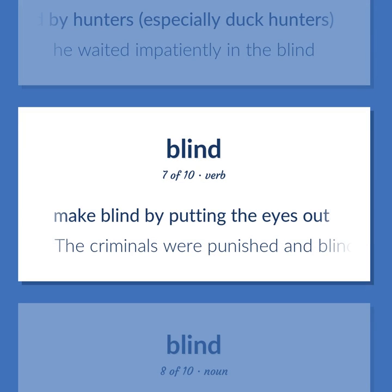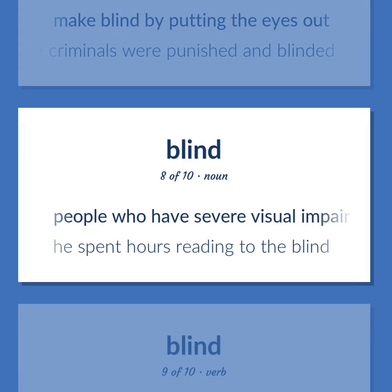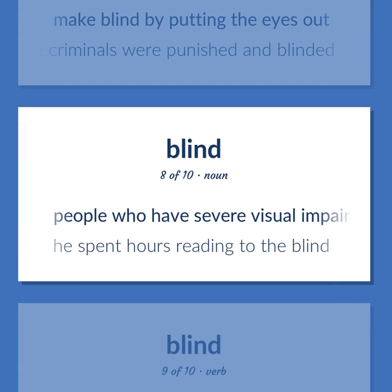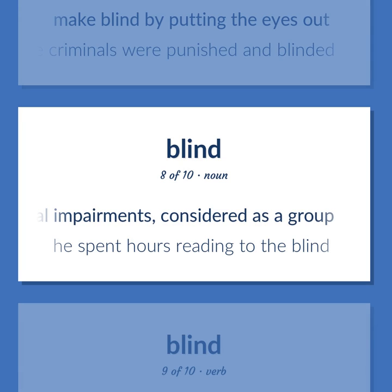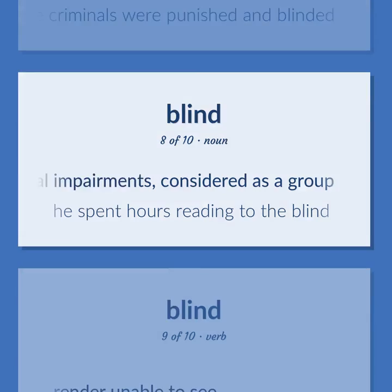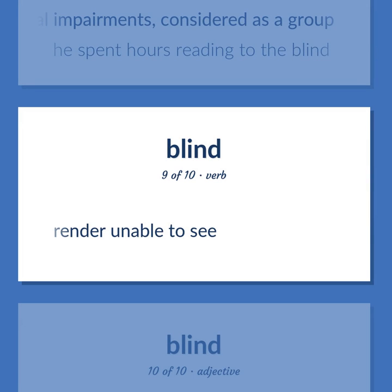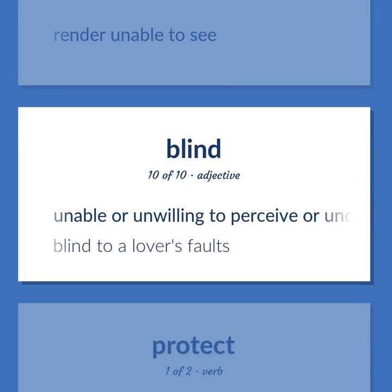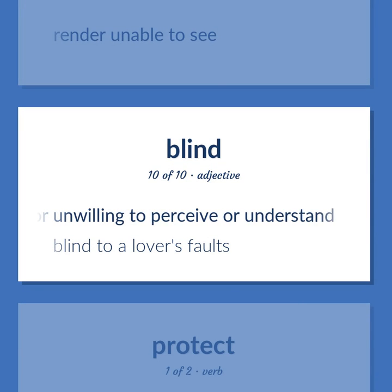Make blind by putting the eyes out. The criminals were punished and blinded. People who have severe visual impairments, considered as a group. He spent hours reading to the blind. Render unable to see. Unable or unwilling to perceive or understand. Blind to a lover's faults.